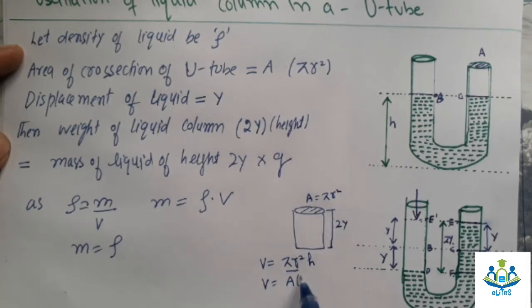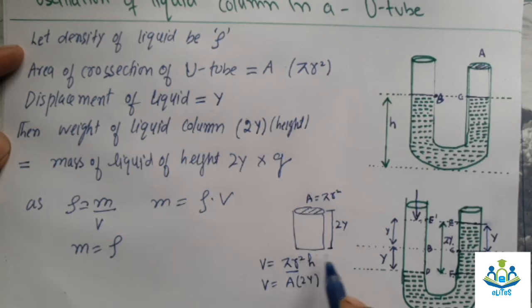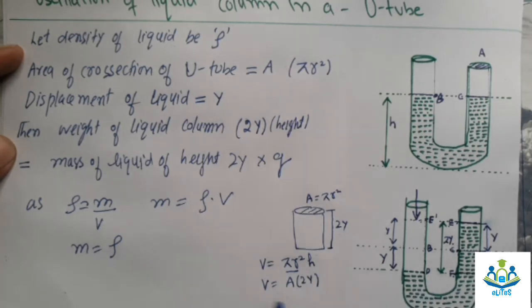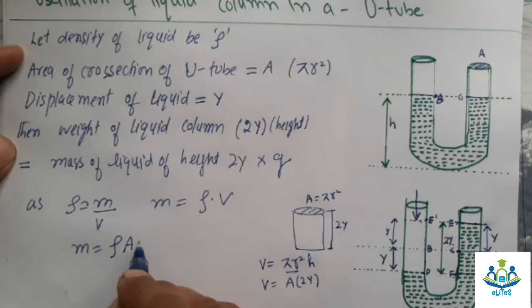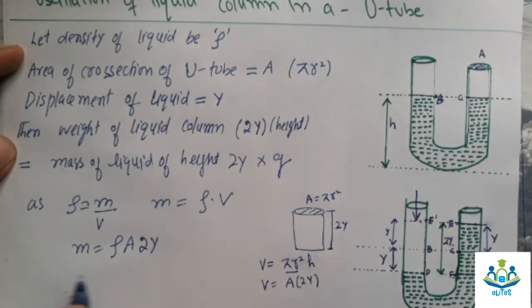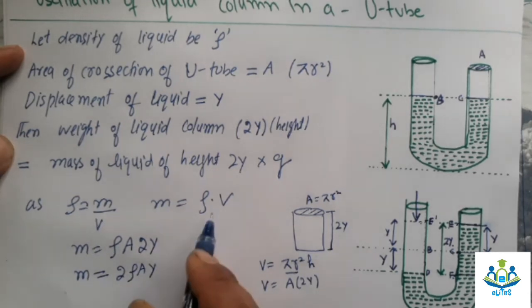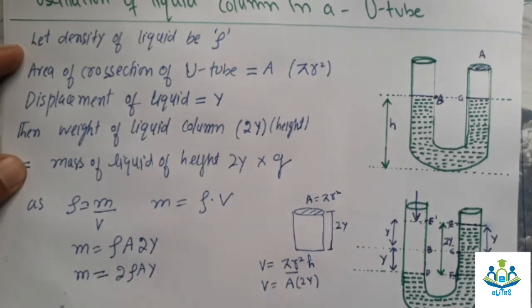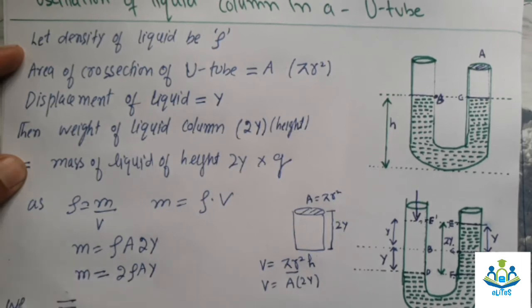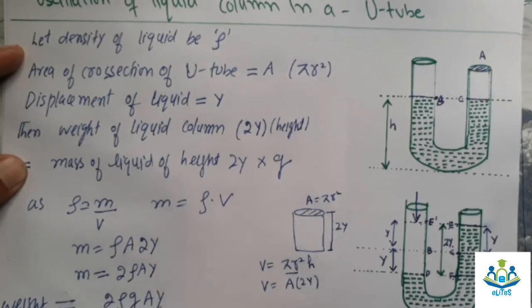Volume of cylinder is πr² into height, but here this is area of cross section and height is 2Y. So volume will be A into 2Y. Mass equals ρA into 2Y, or m = 2ρAY. And weight of the liquid will be 2ρgAY.